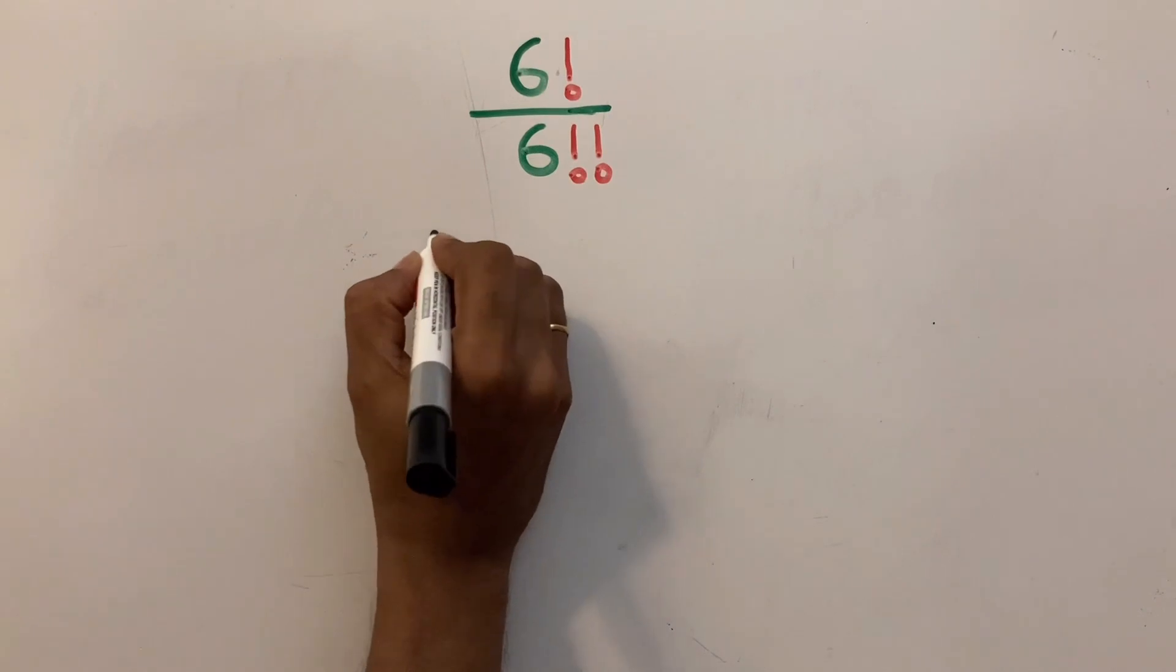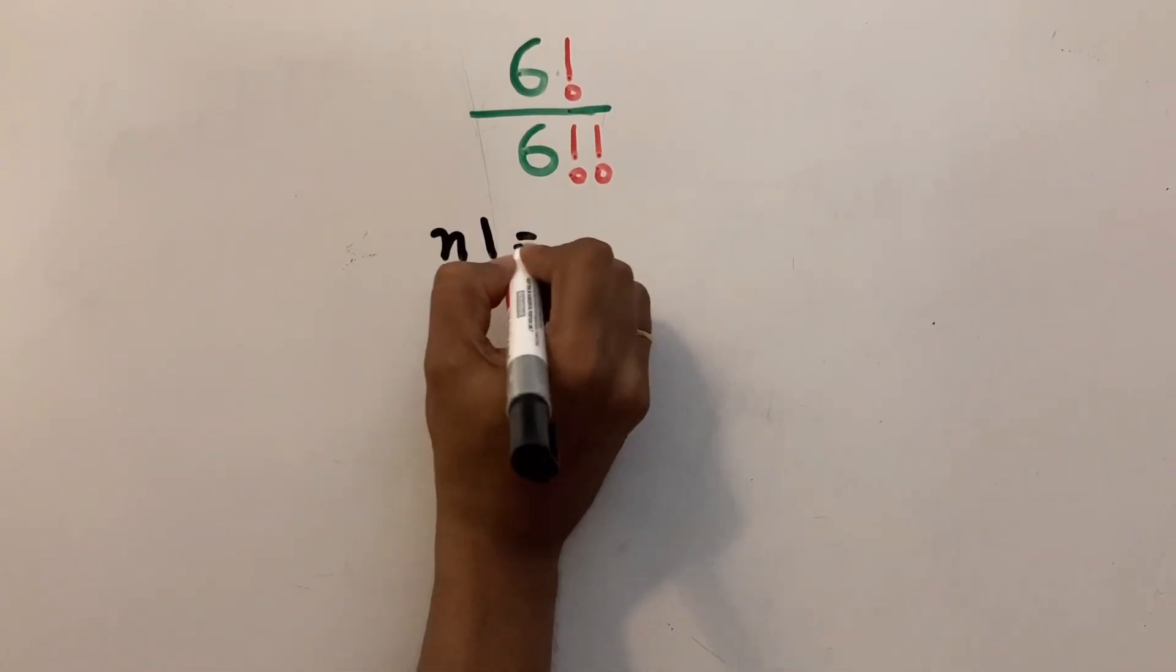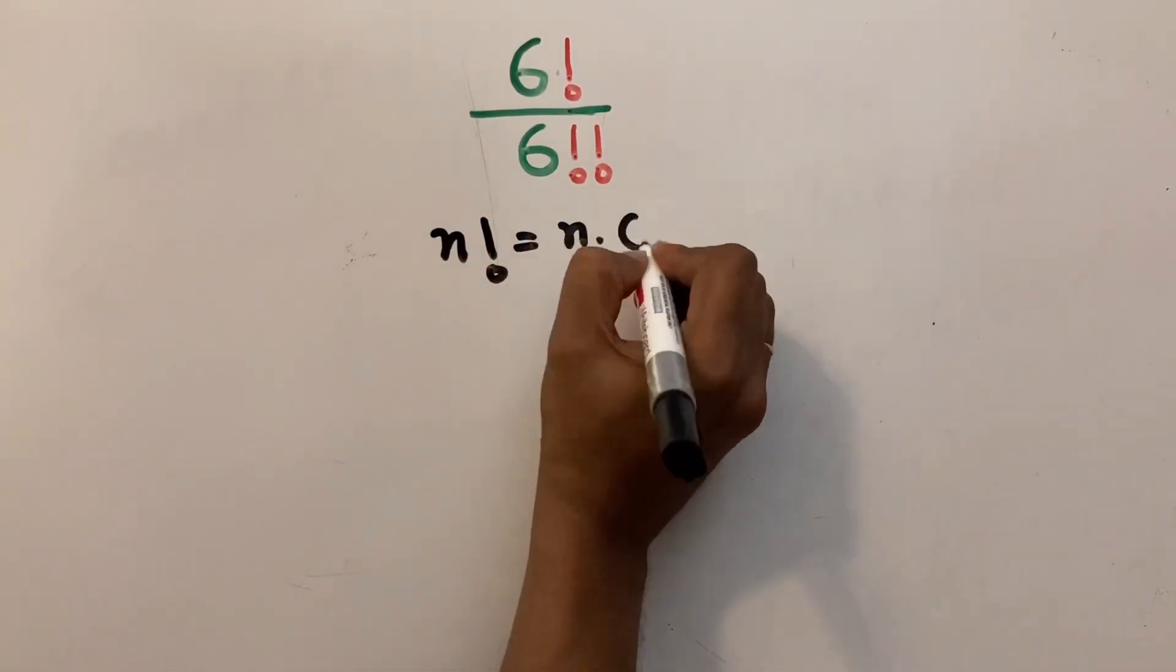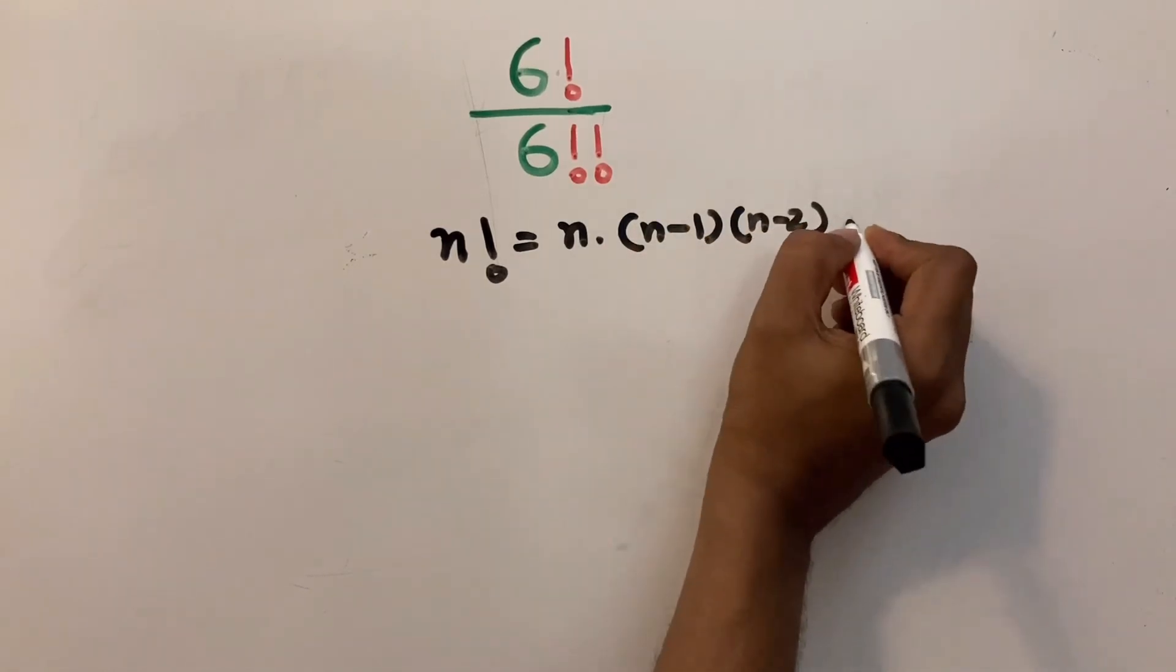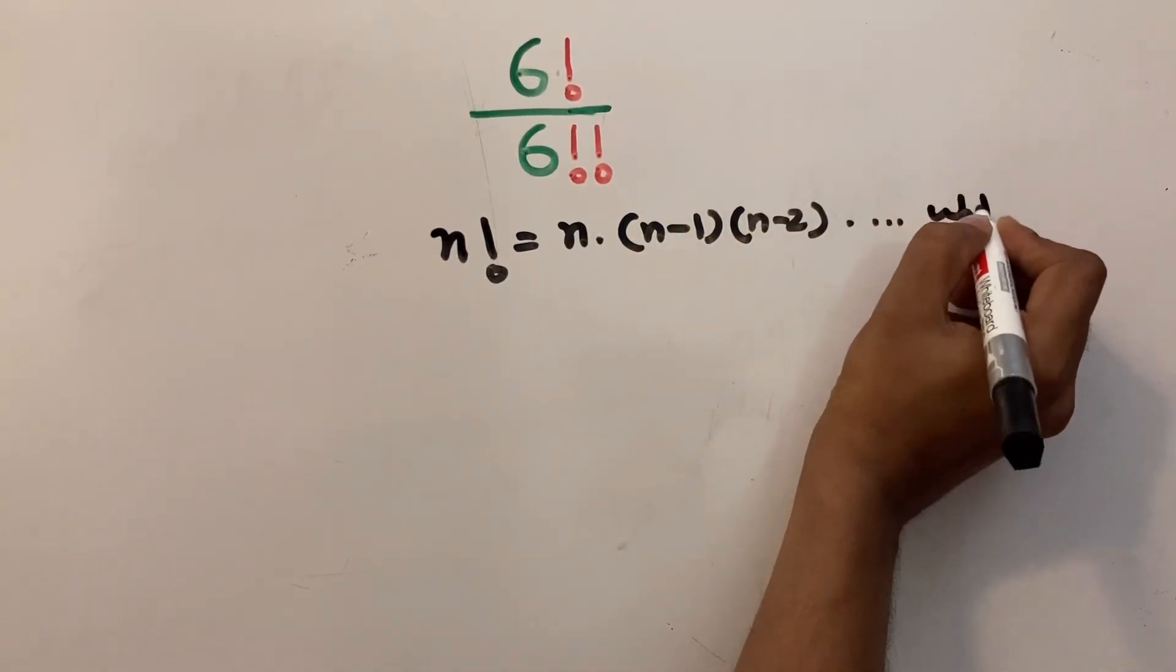As we know that factorial of n equals n multiply n minus 1 multiply n minus 2 multiply up to 1.